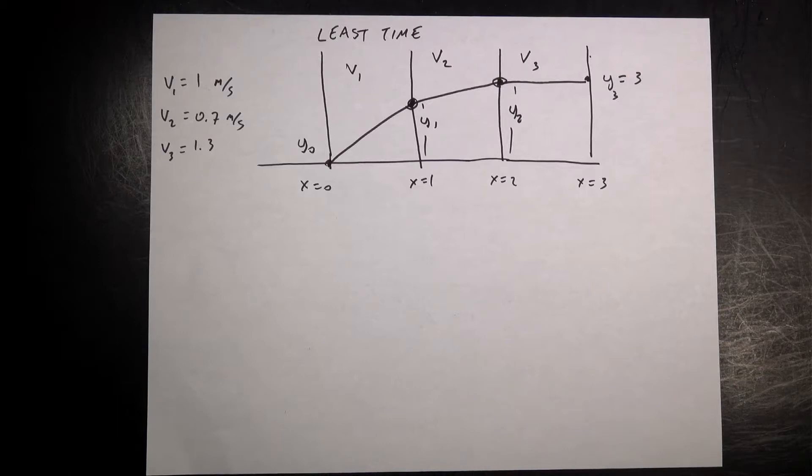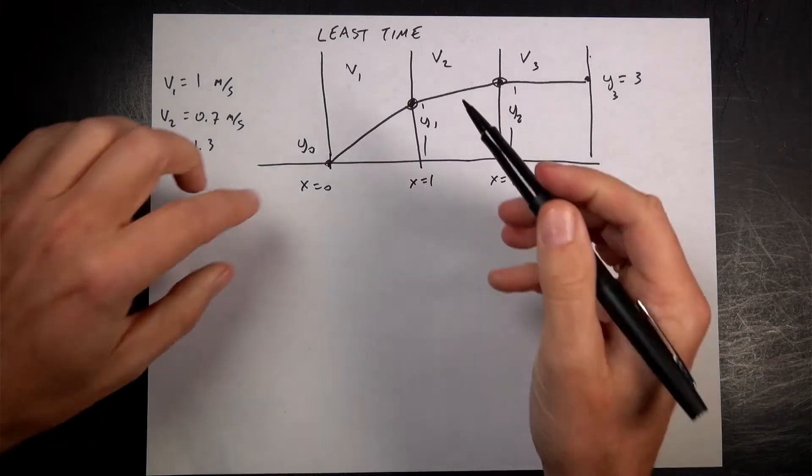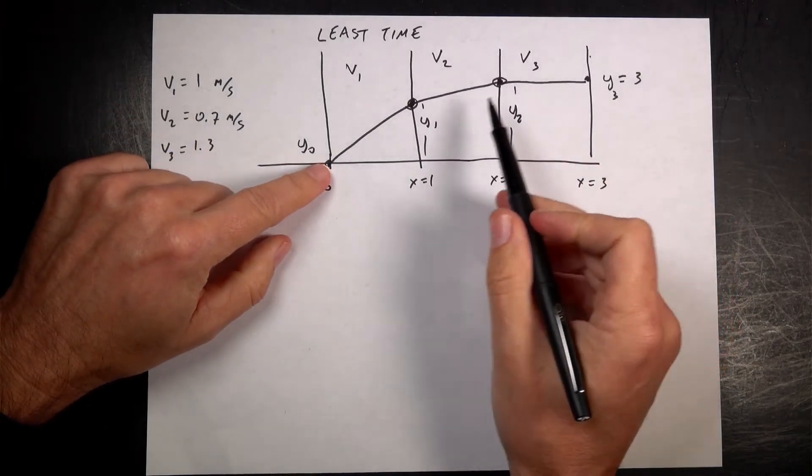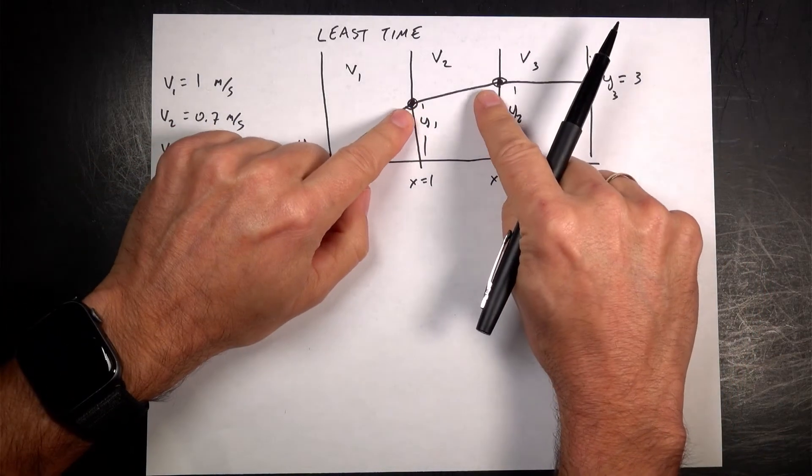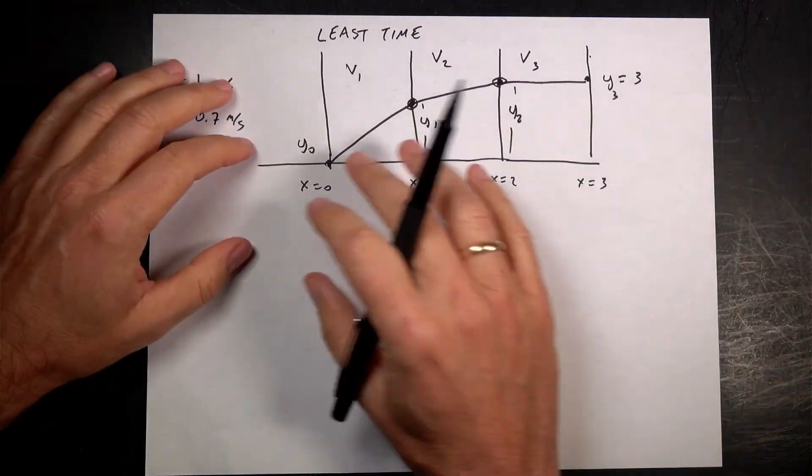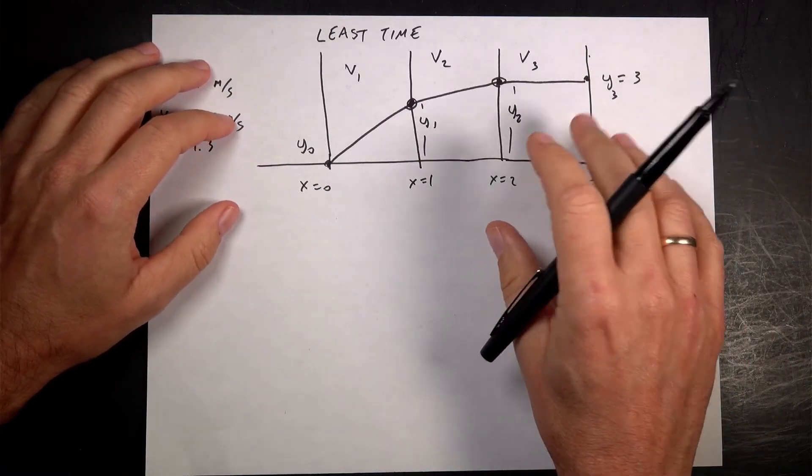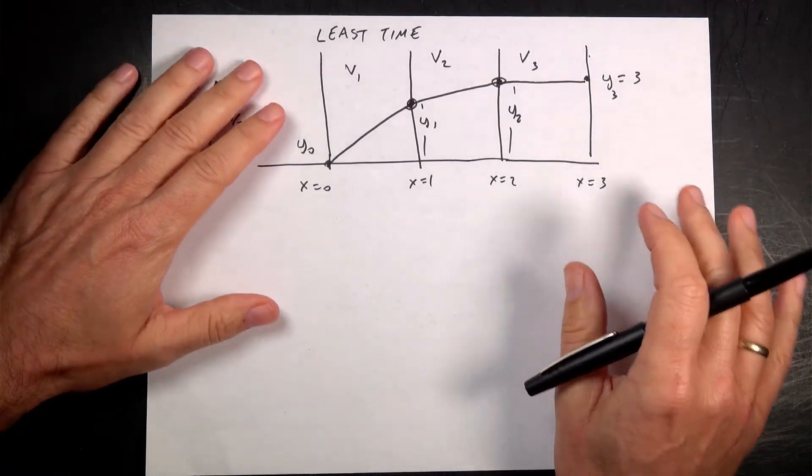And I thought about this and I thought it'd be fun to solve this in a unique way. I like to do unique things. So what I'm going to do is to set this up. I'm going to have these four points. These two are fixed. They can't move. I can only move these two points. And if I can do it for two points, I can do it for an infinite number of points, which is what we're doing in the variational principle.